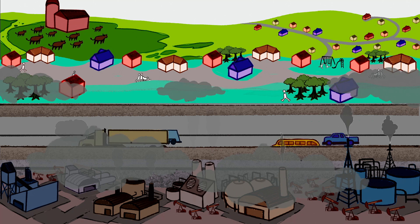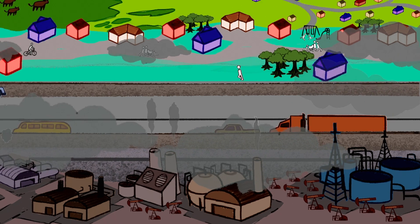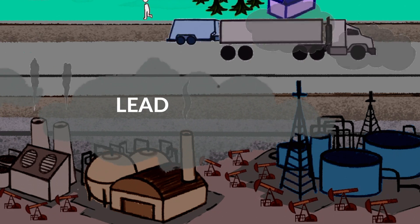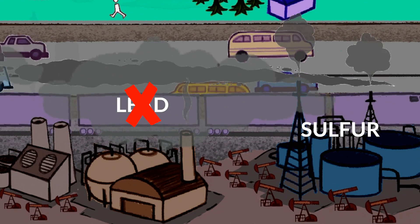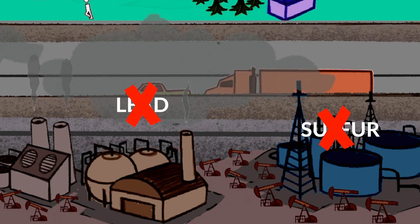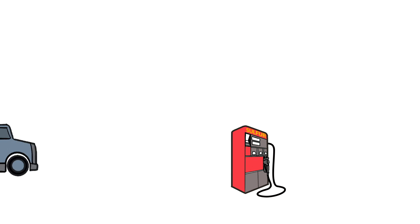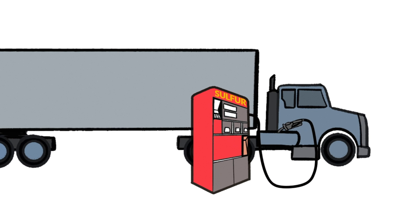Instead of trying to remove air pollution after it is produced, some strategies can help reduce the formation of air pollution. A common strategy to reduce air pollution is the use of alternative fuels that create fewer emissions when they are burned.